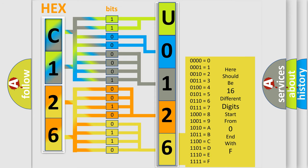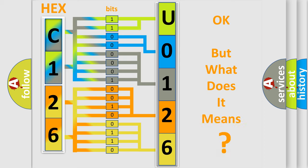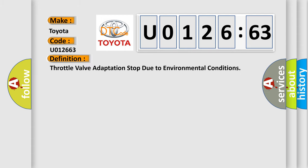We now know in what way the diagnostic tool translates the received information into a more comprehensible format. The number itself does not make sense to us if we cannot assign information about what it actually expresses. So, what does the diagnostic trouble code U012663 interpret specifically for Toyota car manufacturers? The basic definition is: Throttle valve adaptation stopped due to environmental conditions.